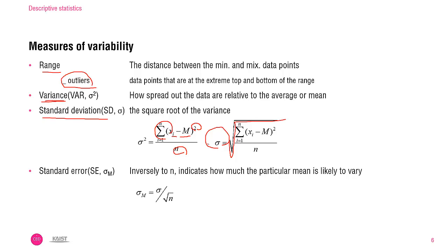In addition to these three, here you are presented with the standard error. Standard error indicates how much the particular mean is likely to vary. You calculate the standard error by dividing the standard deviation by the square root of population size n. Therefore, the standard error is inversely proportional to the population size.